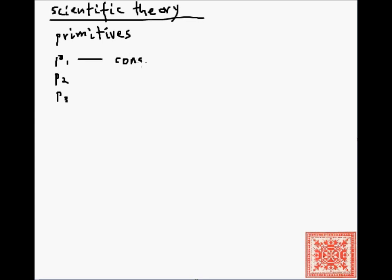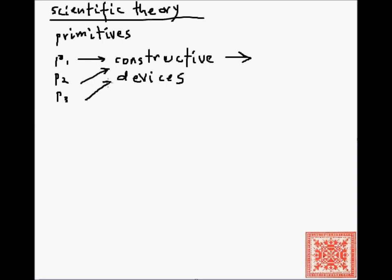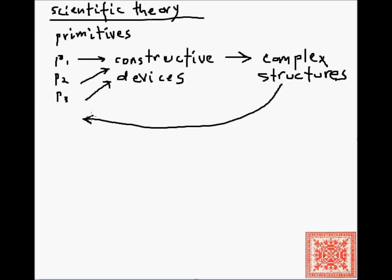Any theory will have to have a bunch of formally defined constructive devices — devices that will operate on the primitives of the theory. Those constructive devices work on primitives and construct more complex structures out of those primitives. For example, constructing a line out of two dots, a segment out of two points, or a triangle from three points. Those complex structures may in turn become primitives themselves.